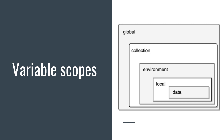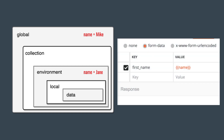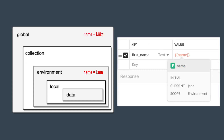In order to understand variable scopes, let me show you an example. I have set a variable with the key 'name' and value 'Mike' in the global space, and in an environment I have set the same variable but with a value 'Jane'. Now the question is: in the request builder, if you try to access 'name' as a variable key, which value will get picked up? Postman will look through all the scopes for this key name.